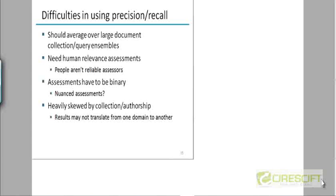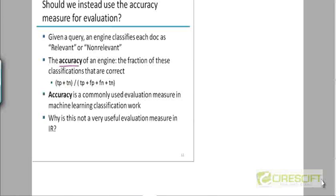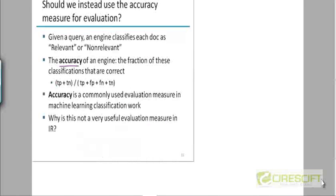A student asks about the accuracy metric: the denominator is the number of documents in the corpus, right — that is, true positive plus false positive plus false negative plus true negative. The student then asks whether accuracy would work for a proper search engine, given that some engines might return everything as not relevant.